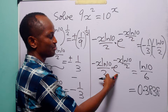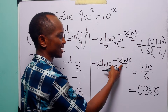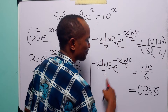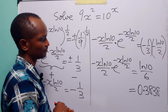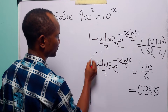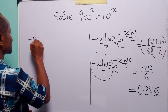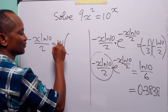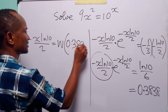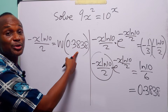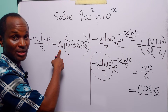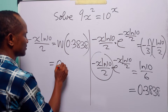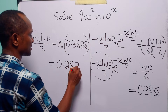Notice that what we have before the Euler number is exactly the same thing that we have in the exponent of the Euler number: minus x ln 10 over 2. So now we can apply the Lambert W function to both sides of this equation. On the left-hand side, we have minus x ln 10 over 2, and this is equal to the Lambert W function of 0.3838. When you input this number into a Lambert W function calculator — there are several available online — it will return one value, which is equal to 0.2878.